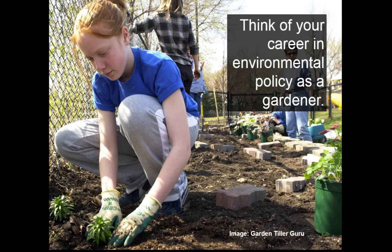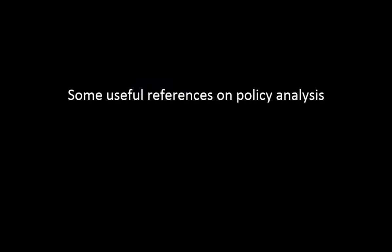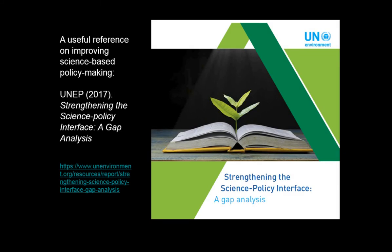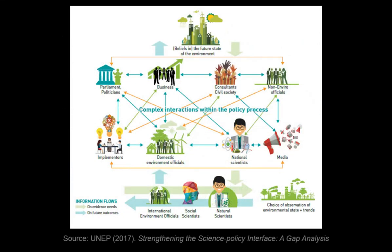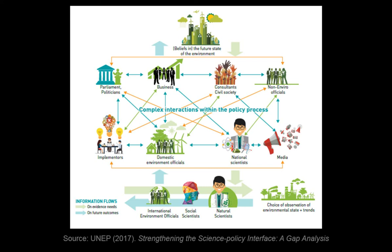Think of yourself as a gardener — you're cultivating and improving, but you're never just going to solve and walk away from your garden. Your career in environmental policy is like a gardener's. A useful reference is the UNEP 2017 'Strengthening the Science-Policy Interface: A Gap Analysis.' They had a useful diagram about the complex interactions between policy: natural scientists, policy makers, domestic environmental officials, implementers, politicians, business consultants, civil society, non-environmental officials, and the media are all interacting. It's really complicated — it's not just scientists working out what to do and going to do it.